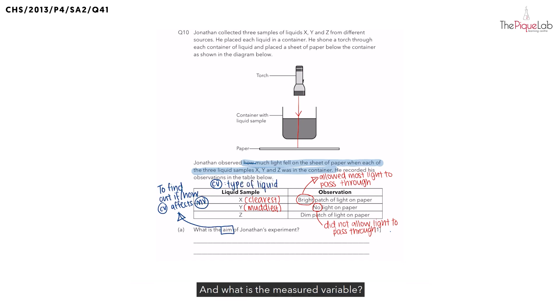And what is the measured variable? Over here we observe the amount of light that falls on the sheet of paper. So that is the measured variable. So put it all together, how would you answer part A?